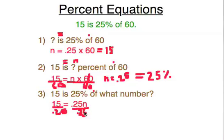.25 cancels on the second side, leaving us with n equals, and if you take 15 divided by .25, you'll get 60. And if you want, you can try that on a calculator.